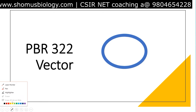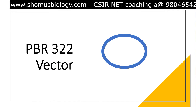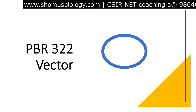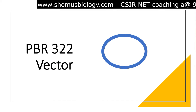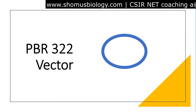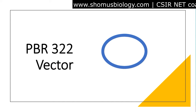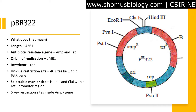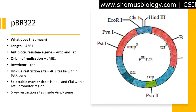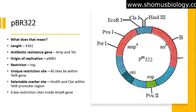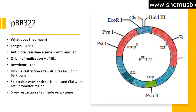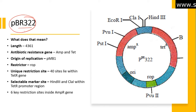Let's talk about the PBR322 vector. Whenever we discuss a cloning vector, we want to talk about the different components. In this case, since it's not a naturally occurring vector — we created it — we also want to discuss how we created it. So what does PBR322 mean? This is a synthetic vector, and based on the creation date, place, and the researchers who created it, the name is given.